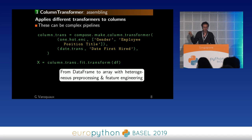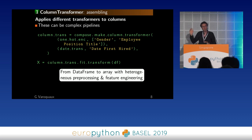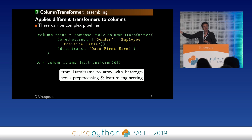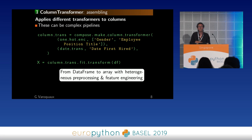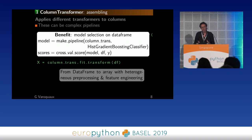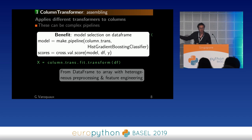The ColumnTransformer object takes a list of pairs of transformers and column selectors. Selectors can be column names. With this code, I'm telling it I want to apply a one-hot encoder to the gender and employee position title columns, and my date transformer to the date_first_hire column. Now I can call the ColumnTransformer on a DataFrame, and it does all the magic and outputs a numpy array. I can build complicated pipelines using this pattern, pipeline it with a fast gradient-boosting classifier new in 0.21, and then just apply cross-validation on the raw data.